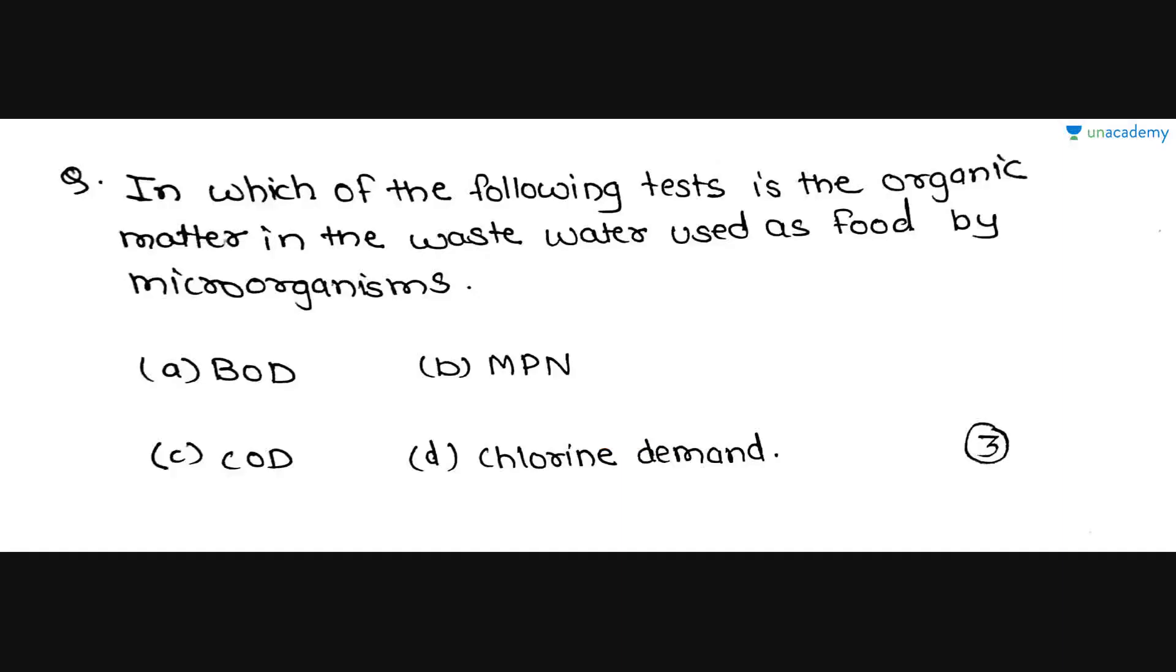The next question is, in which of the following tests is the organic matter in the wastewater used as food by microorganisms? Organic matter in wastewater is used as food by microorganisms in BOD only. The MPN is the most probable number that we have seen in water supply engineering. COD also, it is not used. Chlorine demand is a different part. So A, BOD, is the correct option for this question. In BOD test, the organic matter in the wastewater is used as food by the microorganisms.